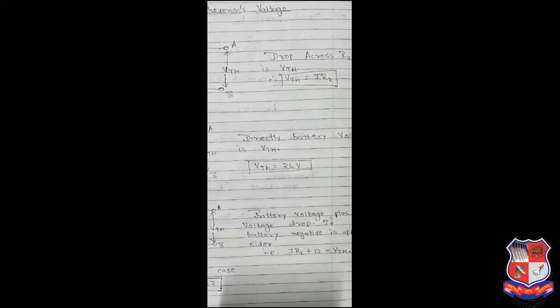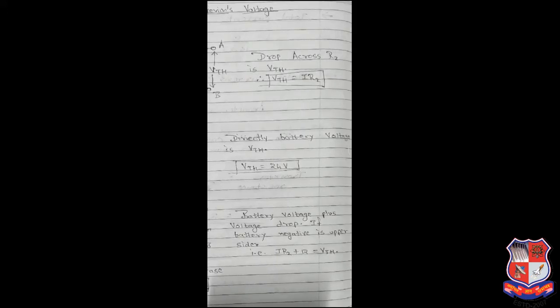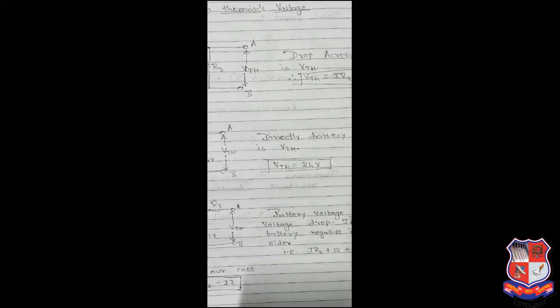Now we have case 2. It is the battery with resistance. What do we need to do to find VTH? We need to consider both batteries. The battery is positive and negative. We need to calculate VTS. VTS is equal to 24V.